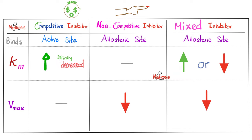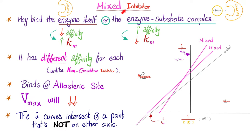Let's add mixed inhibitors to the picture. Where do they bind? The allosteric site. They might decrease affinity — so KM will go up — or raise affinity — so KM will go down. Mixed inhibitors always lower VMAX. Why? Because mixed inhibitors are mixed: sometimes they bind the enzyme alone, and other times they bind the enzyme-substrate complex. If they bind the enzyme alone, no one else can bind, affinity decreases, and KM goes up. If they bind the enzyme-substrate complex, the substrate and enzyme are already bound, so affinity is high and KM is low.